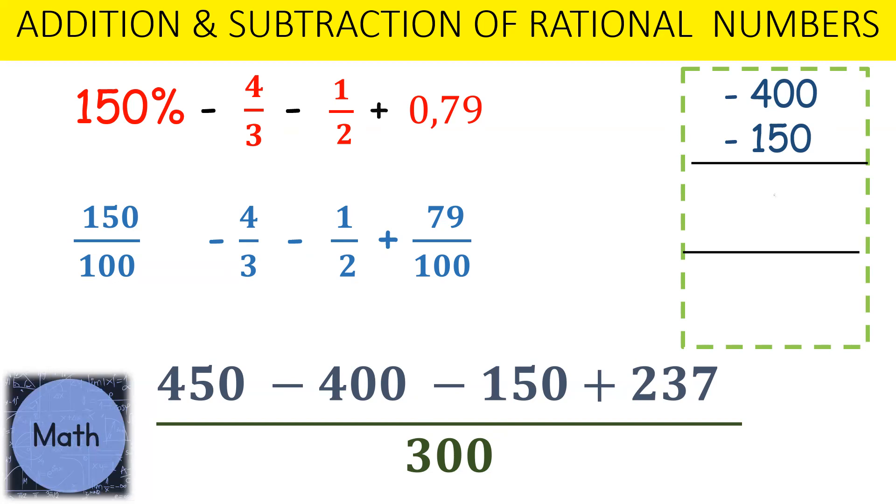400 minus, well, negative 400 plus negative 150 will give us negative 550. Now we have positive signs, let's start with the 450, it's a positive sign. You'll see that the negative sign, 550 is a larger value, which means we'll have a negative, and 550 less 450 will give us 100, and we'll have a negative sign. Now we'll add 237.